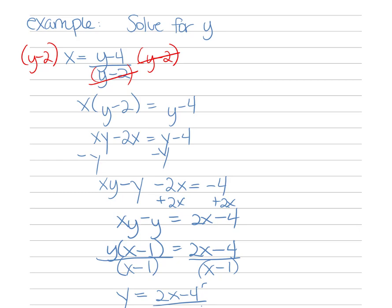Analyzing the answer: factoring the numerator gives 2(x minus 2) over (x minus 1). Since nothing in the numerator is shared with the denominator, we cannot reduce further. So y equals (2x minus 4) over (x minus 1), or equivalently y equals 2(x minus 2) over (x minus 1).